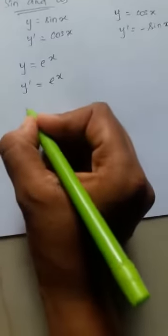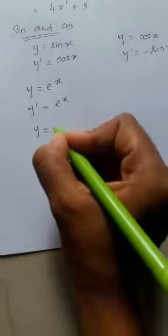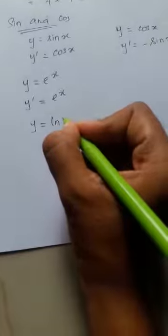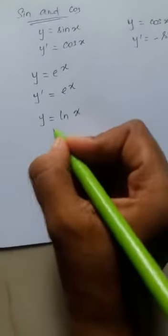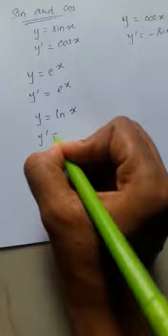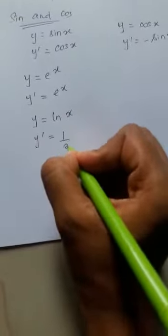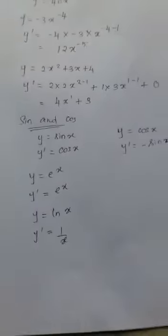If I get y equals natural logarithm x, that is ln x, my derivative will be y dash equals 1 over x. These are the simple rules of differentiation.